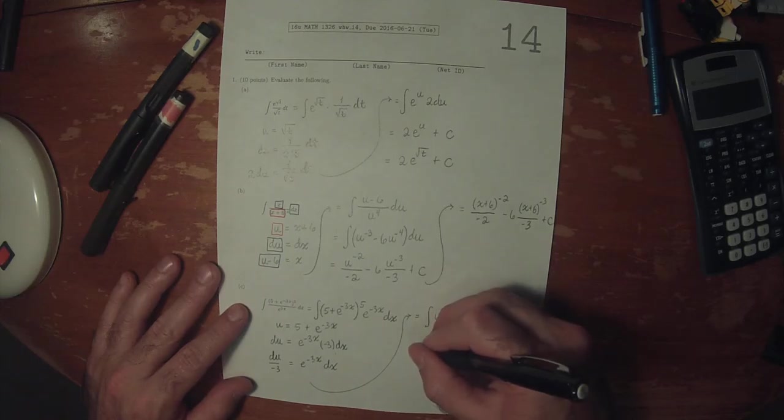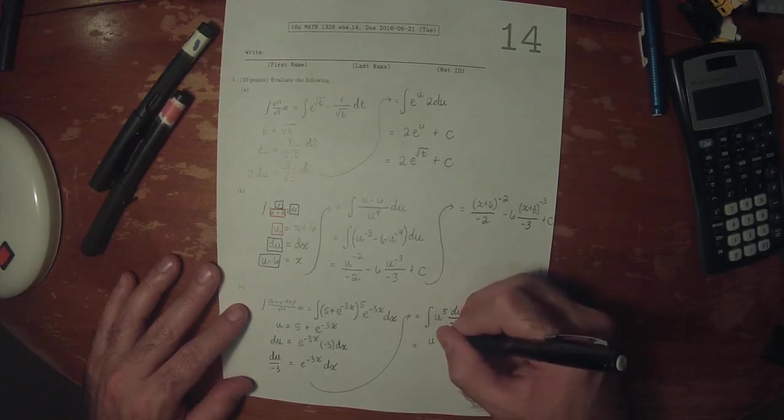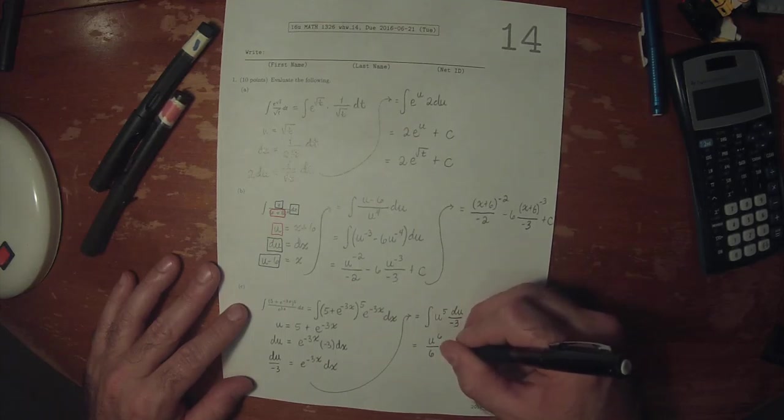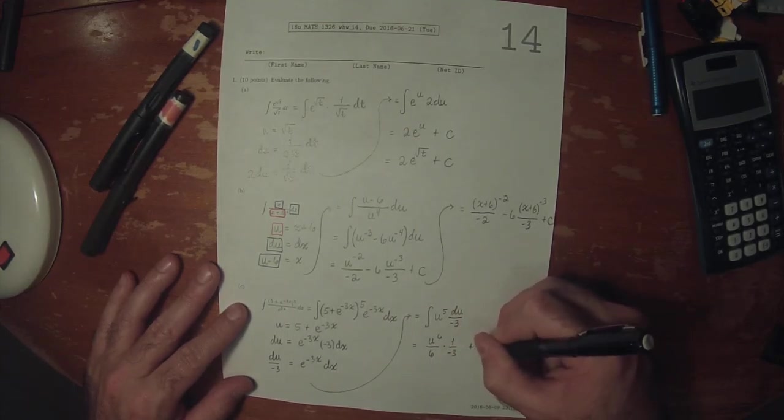And u to 5 is a power rule. So this is u to 6 over 6, multiplied by 1 over negative 3, plus a constant.